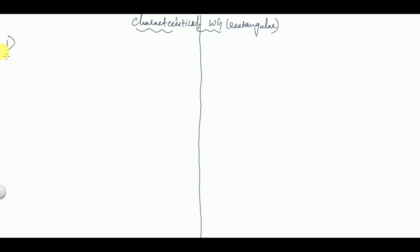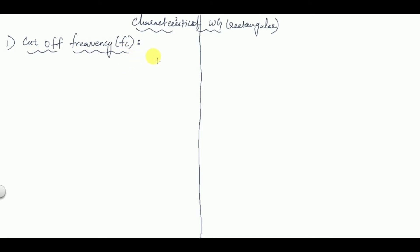The first characteristic of rectangular waveguide is cutoff frequency, fc. As I have told you, a waveguide is a high pass filter — it passes all the high frequencies. So it will have a cutoff frequency, where above that is the pass band and below that is the stop band.